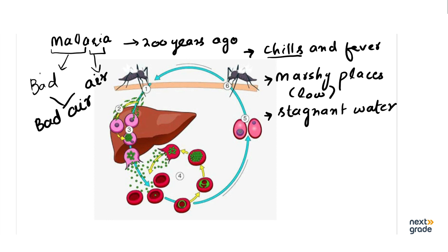اس وقت سارے patient malaria کی وجہ سے مر جاتے تھے کیونکہ اس وقت اس کا علاج نہیں تھا — یہ ایک biological problem تھی، جیسے ابھی COVID تھی اور COVID کی وجہ سے death rate بہت high رہا۔ وہ biological problem تھی، malaria کی وجہ سے deaths ہو رہی تھیں۔ اب اس کے treatment پہ بات آتی ہے۔ Malaria میں ہوتا کیا ہے — chills and fever، بار بار بخار۔ اس وقت کے doctors کا خیال تھا کہ دلدلی علاقوں میں کھڑا گندہ پانی ہوا کو گندہ کر دیتا ہے اور لوگوں کو malaria ہو جاتا تھا۔